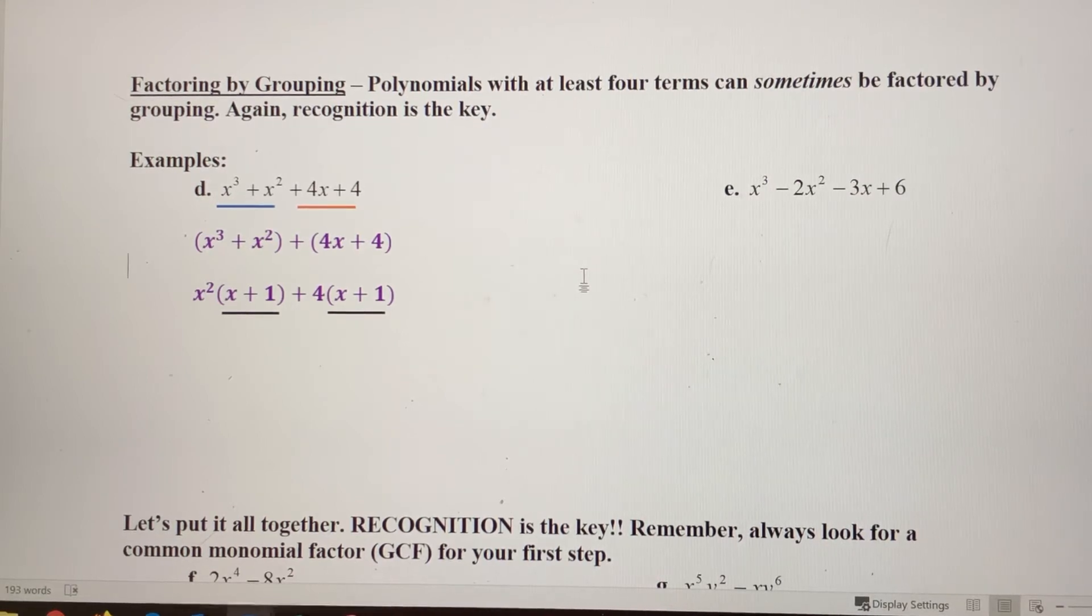Once these two match up, you can use factoring again or use the distributive property in reverse to come up with your answer. So this x squared and this plus four, they're going to go together to make our first binomial factor.